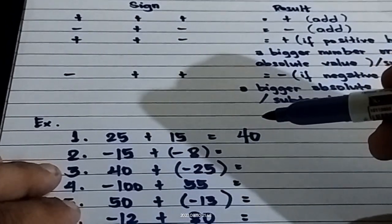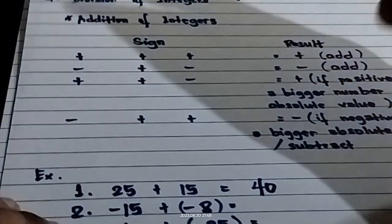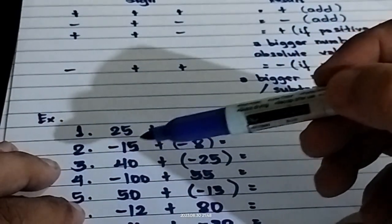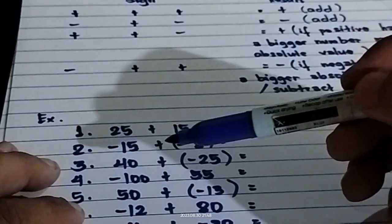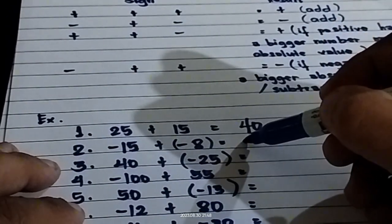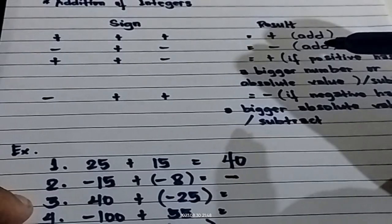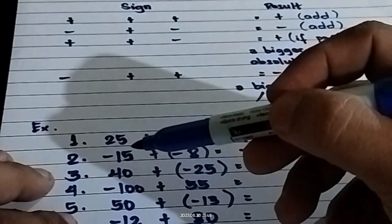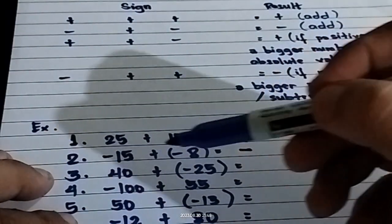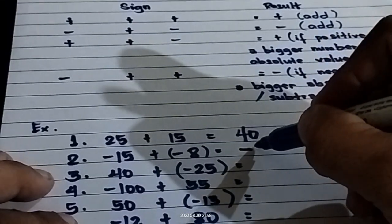Next, number two. We have statement number two: negative plus negative. The answer will become negative. Negative 15 plus negative 8 — you're going to copy the common sign, and then you're going to add 15 plus 8. The answer is negative 23.